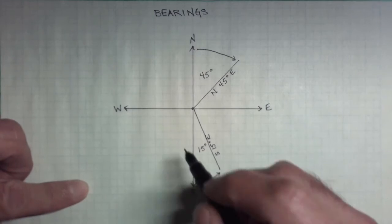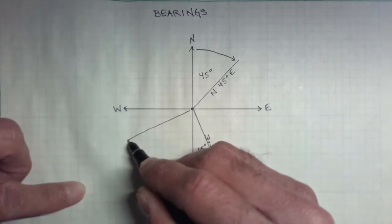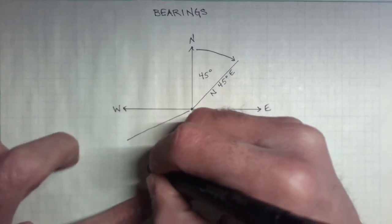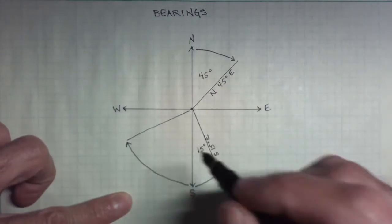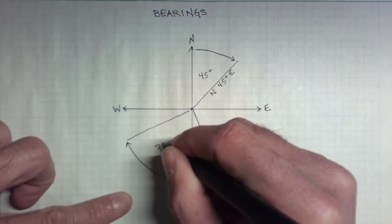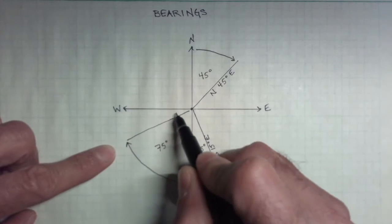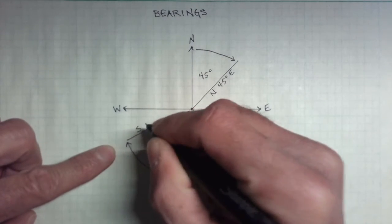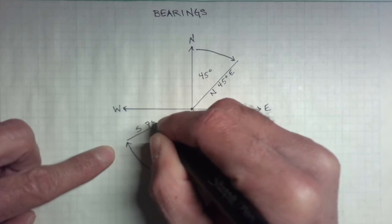In the southwest quadrant, we are recording from the south towards the west some number of degrees. Let's say this is maybe 75 degrees. So the bearing of this line would be south 75 degrees west.